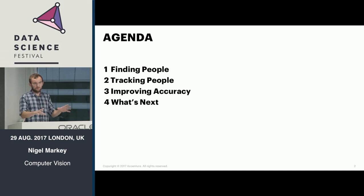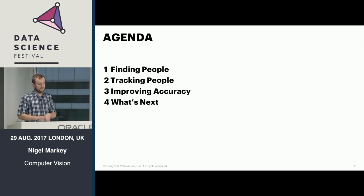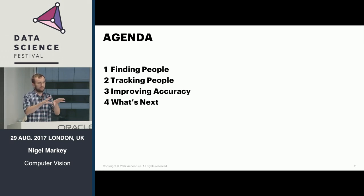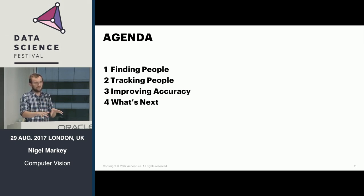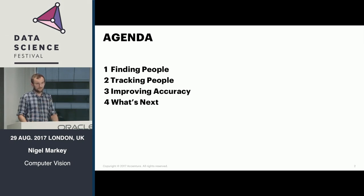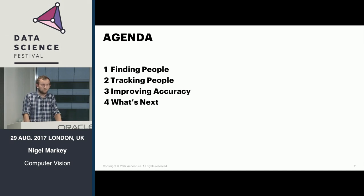We'll start with a basic problem: identifying people and where they are in an image, and tracking them through multiple image sequences. Then we'll talk about improving accuracy — starting with classical approaches that have been done for about 20 to 30 years, and then more recent advancements in neural networks, which I'll cover in the second half. I'll also talk about what's next, because there's some really interesting research going on all the time in image recognition.